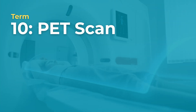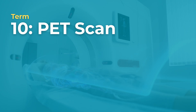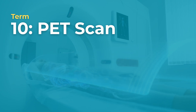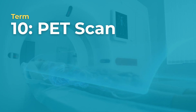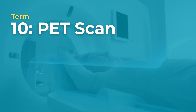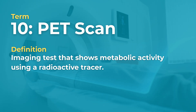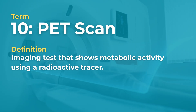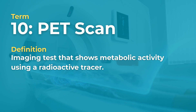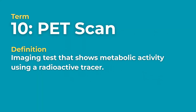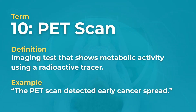Term number ten — PET scan. A PET scan is an imaging test that shows metabolic activity using a radioactive tracer. Example: The PET scan detected early cancer spread.